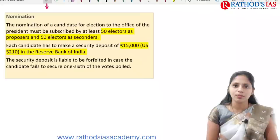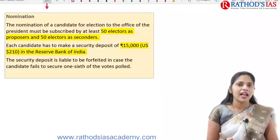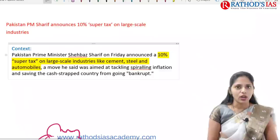After nomination, the candidate needs to make a security deposit of Rs. 15,000 in the Reserve Bank of India. If they get one-sixth of the votes, they get back the deposit. If they do not get that many votes, the money is not retained. This is about the presidential election topic in detail.